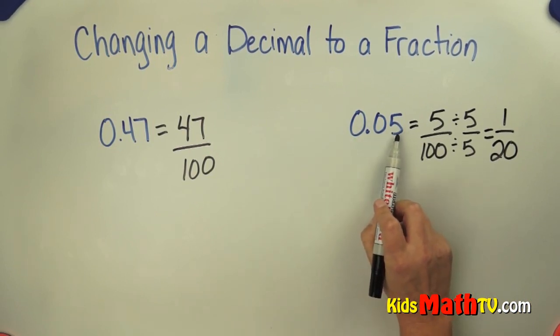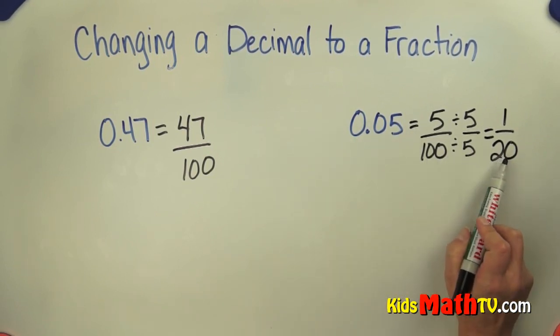So this decimal, 5 hundredths, is the same as 1 twentieth as a fraction. That's the end of our lesson on changing a decimal to a fraction.